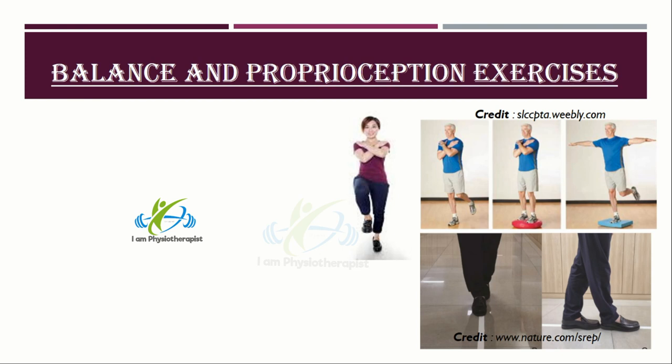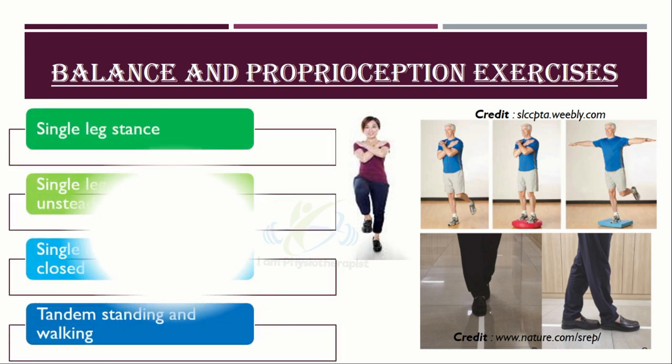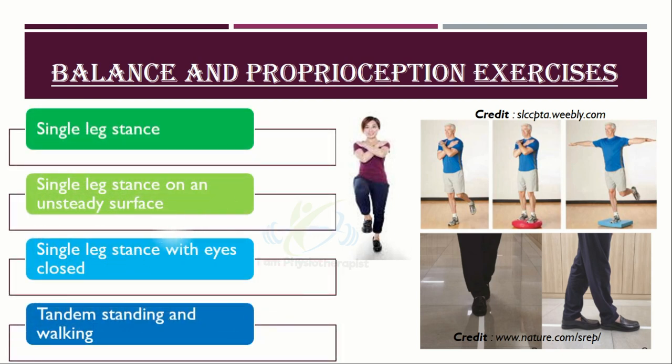Balance and proprioception training is an important component of a gait training exercise program. Exercises that can help improve balance and proprioception may include single leg stance, single leg stance on an unsteady surface, single leg stance with eyes closed, and tandem standing and walking.